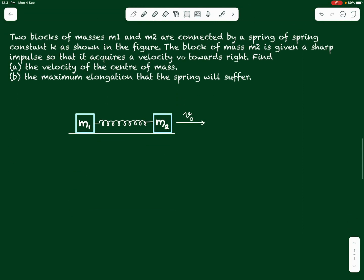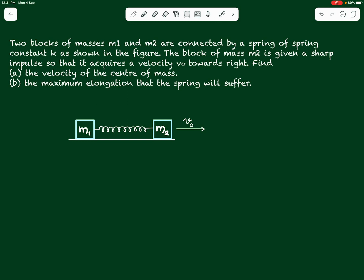Now let us take the next question. Two blocks of masses m1 and m2 are connected by a spring of spring constant k. The block of mass m2 is given a sharp impulse so that it acquires a velocity v0 towards right. Impulse means a sudden change in momentum — someone suddenly strikes m2 so it gains momentum m2*v0. When this change in momentum of m2 happens suddenly, m1 does not get time to change its momentum at that instant. It takes time for m2 to stretch the spring, which then pulls m1 towards the right.